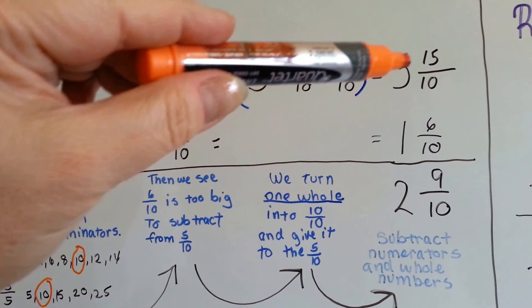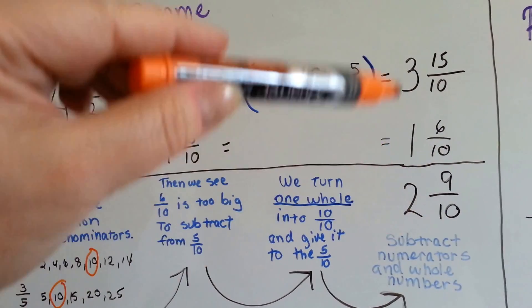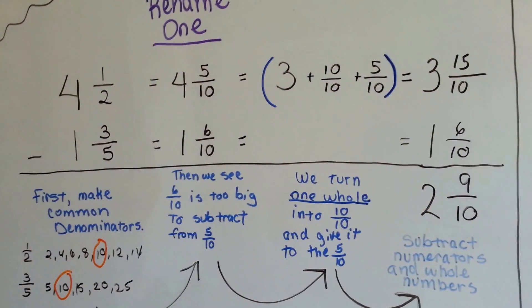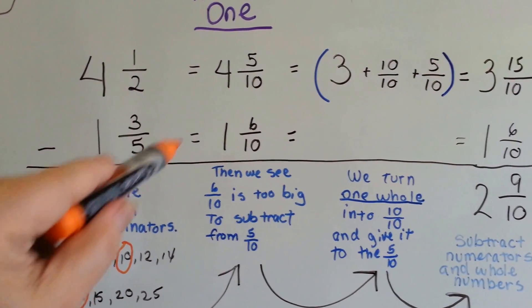15 take away 6 is 9. We slide our 10's down. 3 take away 1 is 2. See that? So, if you're confused about this part,